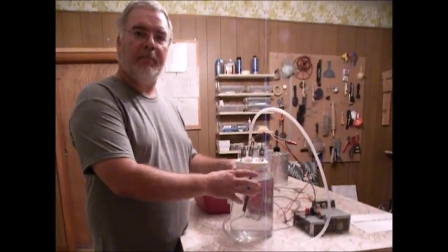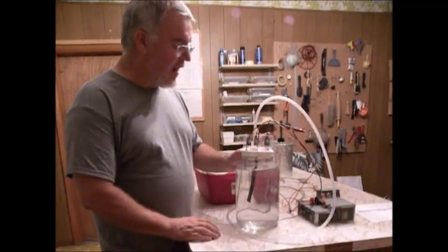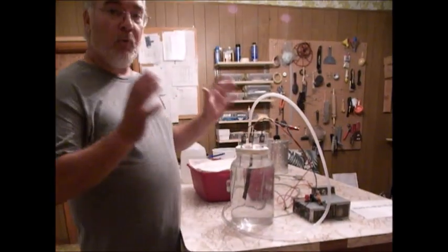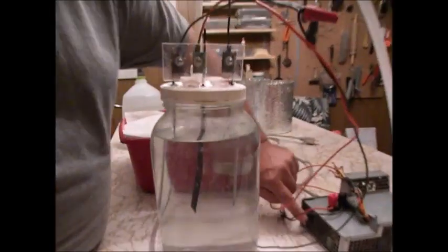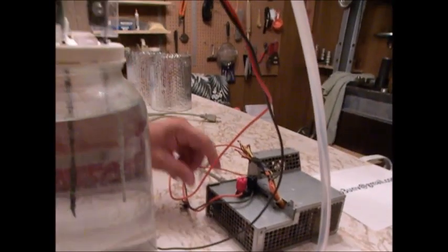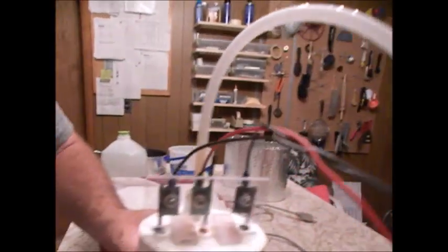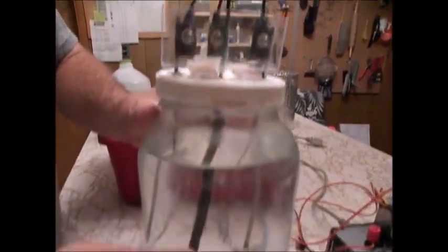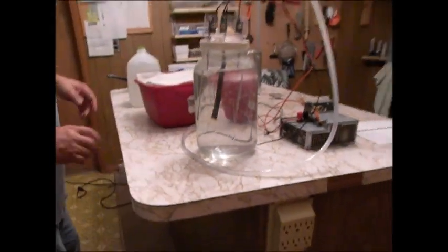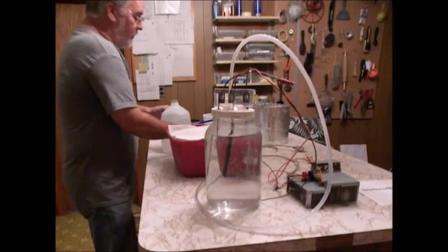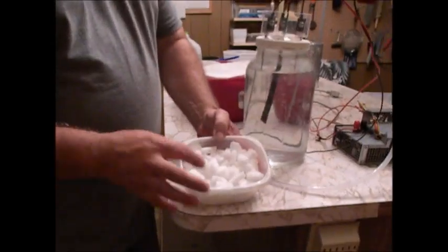First thing I'm going to talk about is the operation of it. That portion is extremely simple: fill with solution, turn on the switch, and it works. So that part is very, very simple. But next thing we need to know is what do we put in here for a solution to produce potassium chlorate.